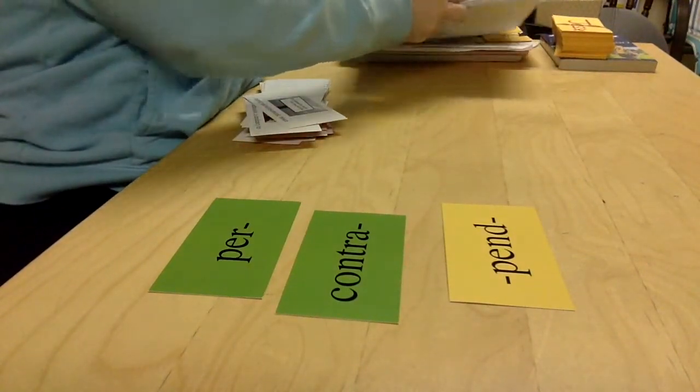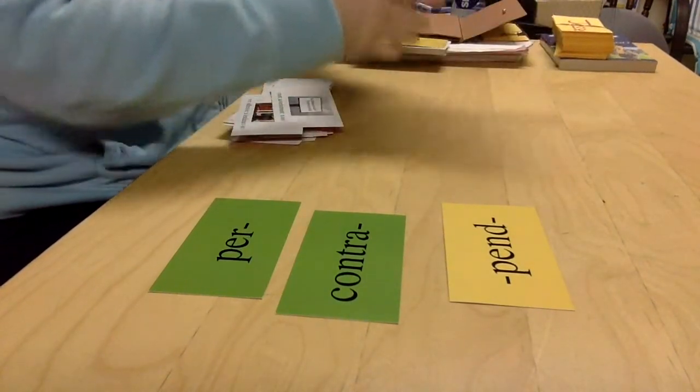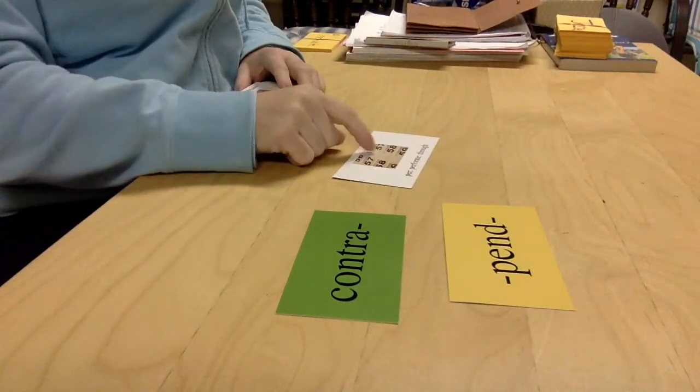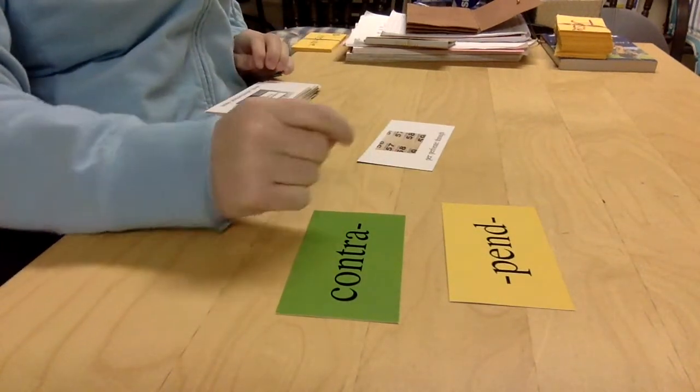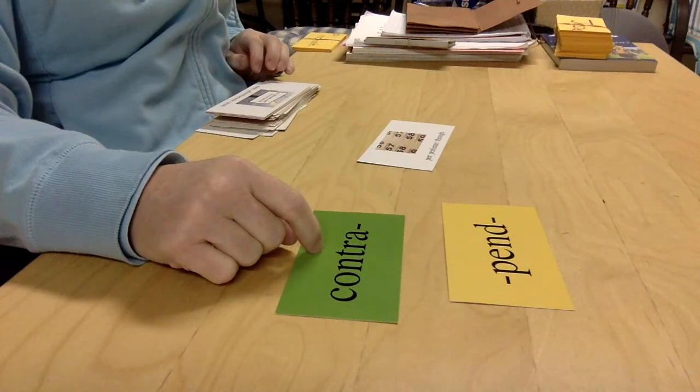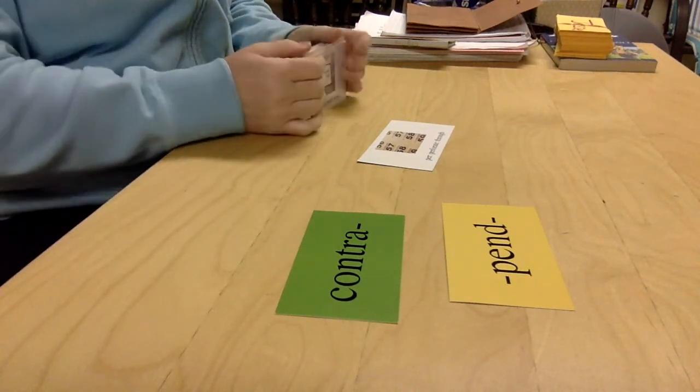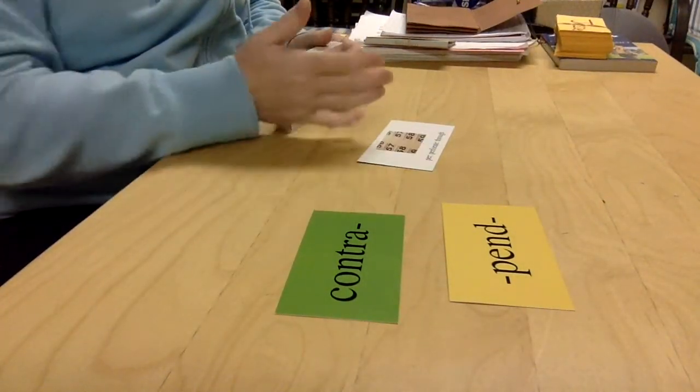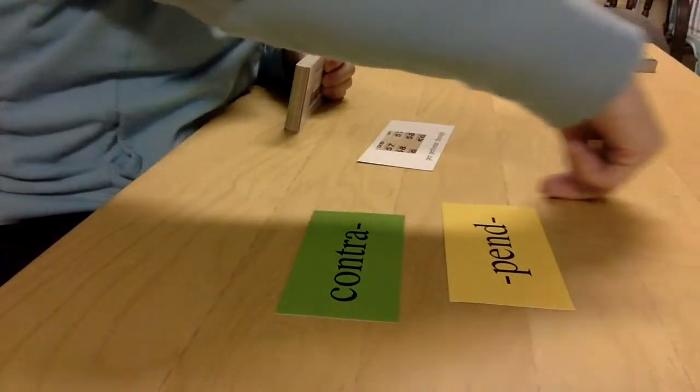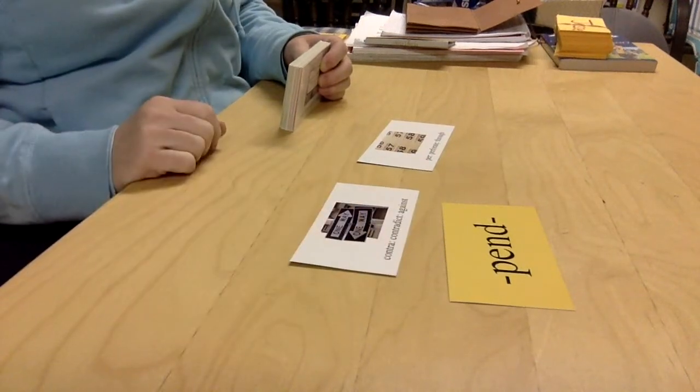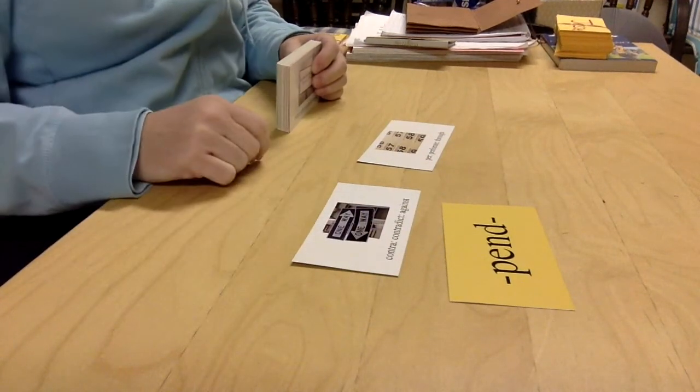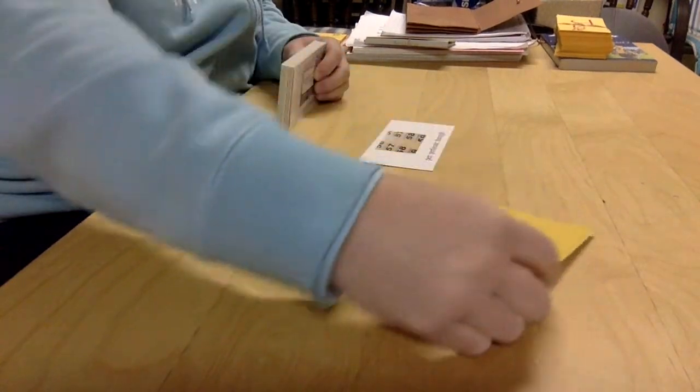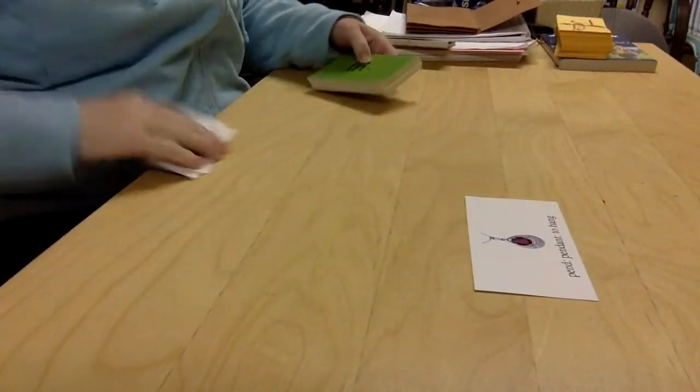So let's go back. Per, remember, if the paper is perforated, it goes all the way through. Contra, if you contradicted what I just said, you went against. And pend, a pendant is a thing that hangs.